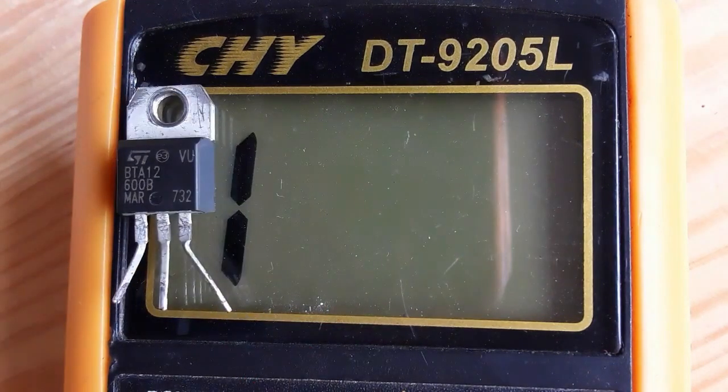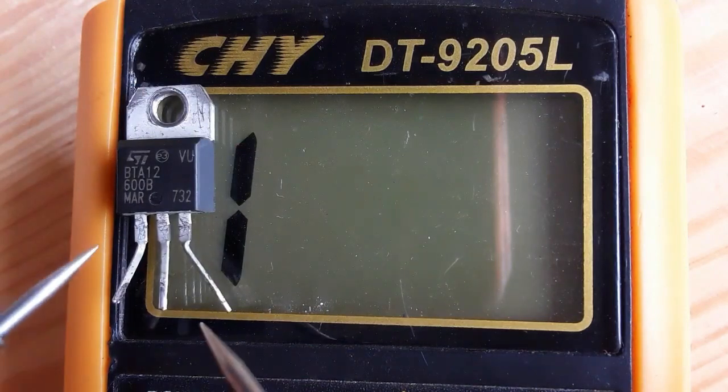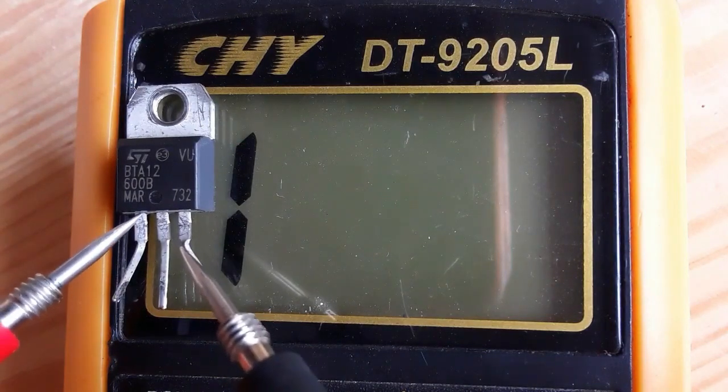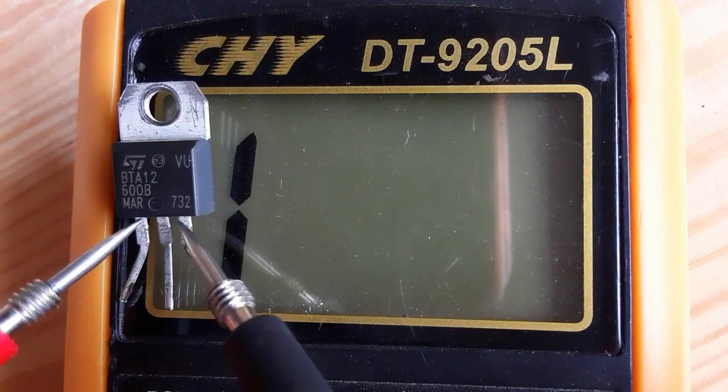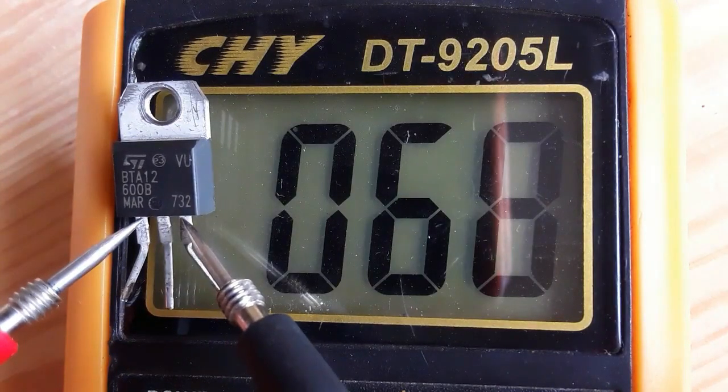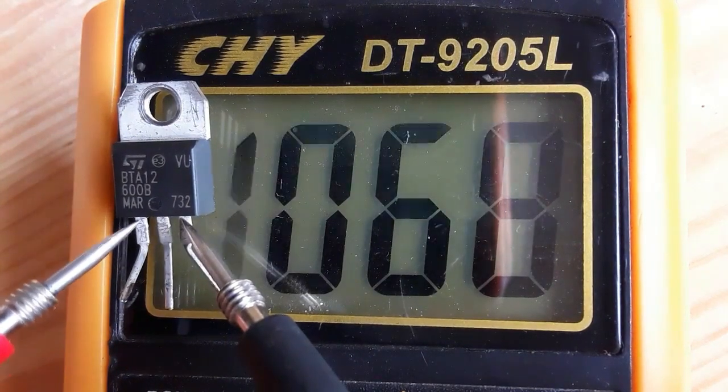Even if we switch the probes, we should get the same value as we did before. So, let's check. We have 0.68. This is a good TRIAC.